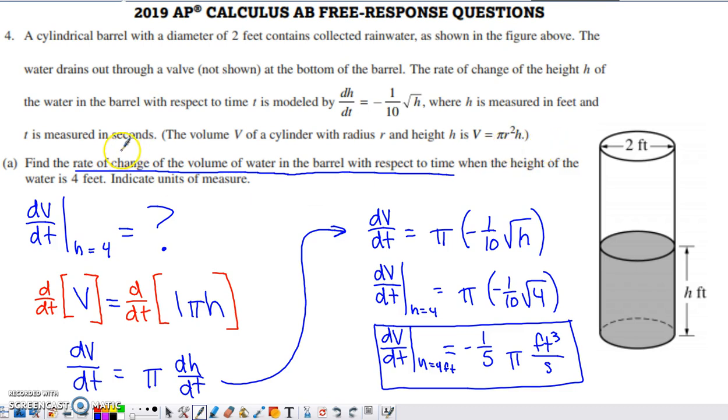In part A, they ask us to find the rate of change of the volume of water in the barrel with respect to time when the height of the water is four feet, and include units of measure. The question is: what is dV/dt evaluated at h equals four? We want the rate of change of volume with respect to time at the moment when h equals four feet.